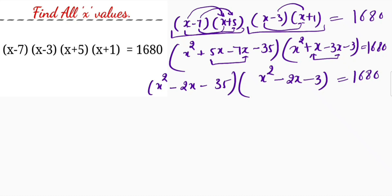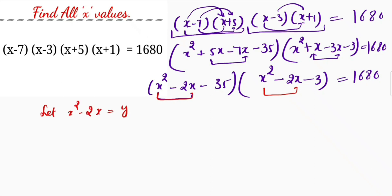Now I think it is clear why we multiplied (x minus 7) with (x plus 5) and (x minus 3) with (x plus 1) first — so that we get the same terms, meaning x squared minus 2x appears in both expressions. Now let me put x squared minus 2x equal to y.